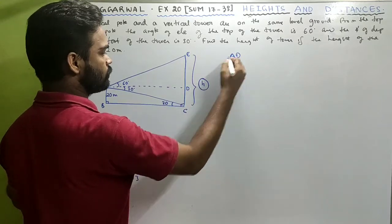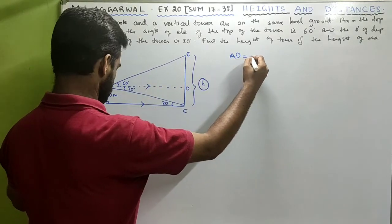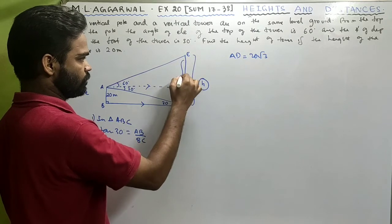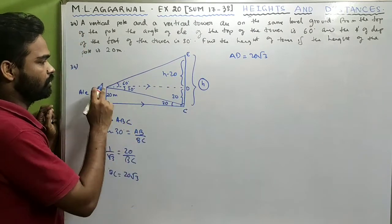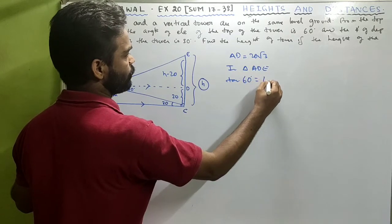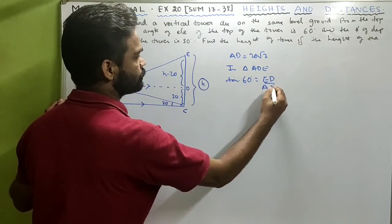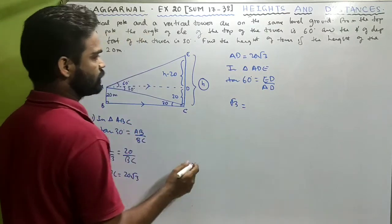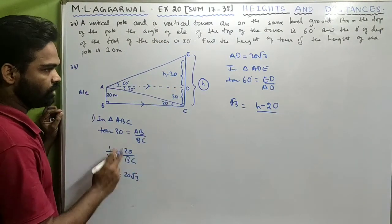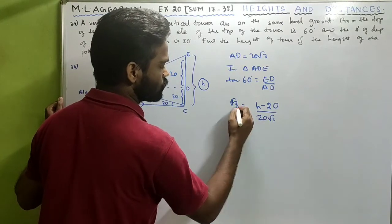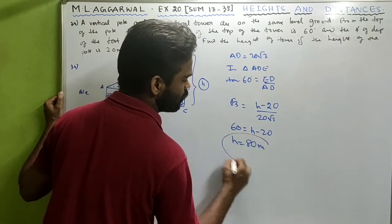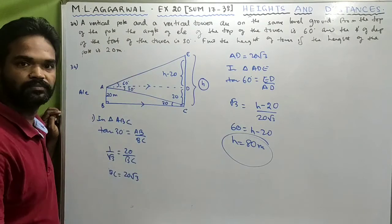In triangle ADE (using angle of elevation 60 degrees), tan 60 = (H − 20)/AD, so √3 = (H − 20)/(20√3), giving H − 20 = 20√3 × √3 = 60, thus H = 80 meters. The height of the vertical tower is 80 meters.